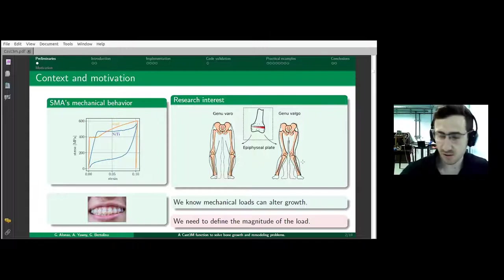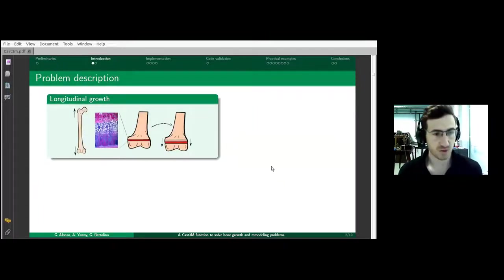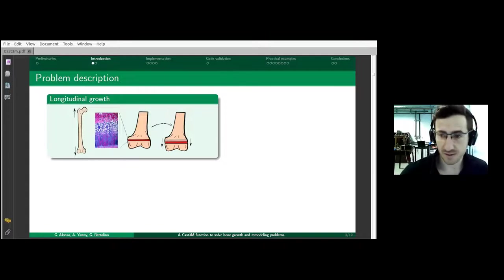To understand this, we have to know there are two mechanisms that determine the shape of long bones. The first is longitudinal growth, which happens in the cartilaginous region. Here cells grow and ossify at a given rate, increasing bone length. The second mechanism is bone remodeling.